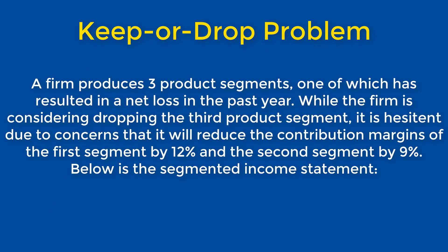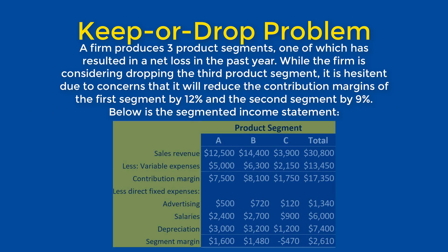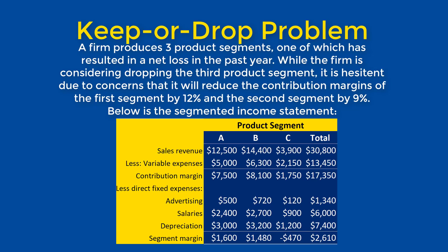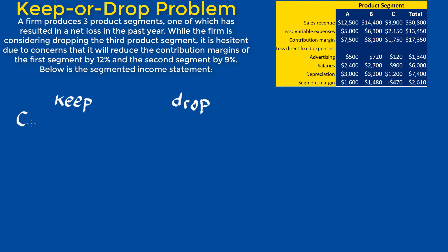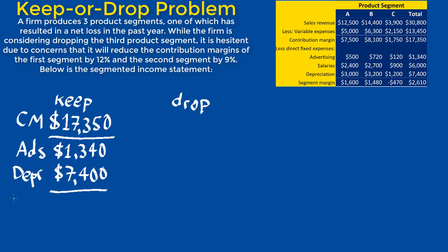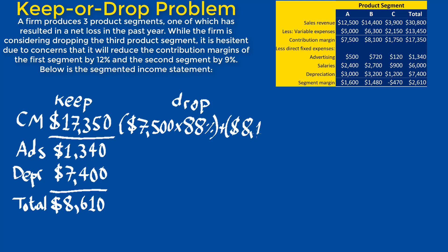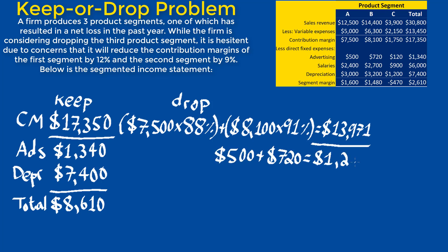Lastly, let's examine an example of a keep or drop problem. A firm produces three product segments, one of which has resulted in a net loss in the past year. While the firm is considering dropping the third product segment, it is hesitant due to concerns that it will reduce the contribution margins of the first product segment by 12% and the second product segment by 9%. Below is the segmented income statement. This statement provides us with the relevant costs for the keep decision, which are $17,350 in contribution margin, $1,340 for ads, and $7,400 for depreciation, giving a total relevant margin of $8,610. If the firm decides to drop, the new contribution margin will be 88% of A and 91% of B, giving a total of $13,971. Relevant costs include $1,220 for advertising and $6,200 for depreciation, giving a total relevant margin of $6,551.